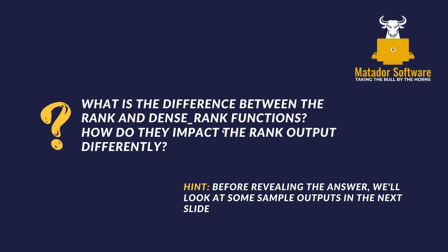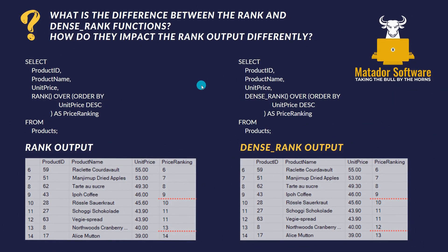Question two — it's not so much a query, but I do have examples. What is the difference between the RANK and DENSE_RANK functions? How do they impact rank output? I'm going to show you some outputs between RANK and DENSE_RANK. The query is simple: we've got product ID, name, unit price column, and the partitions we're ranking over to get the rank of the product ID by the highest unit prices. The only difference between these two queries is the use of RANK and DENSE_RANK — everything else remains the same.